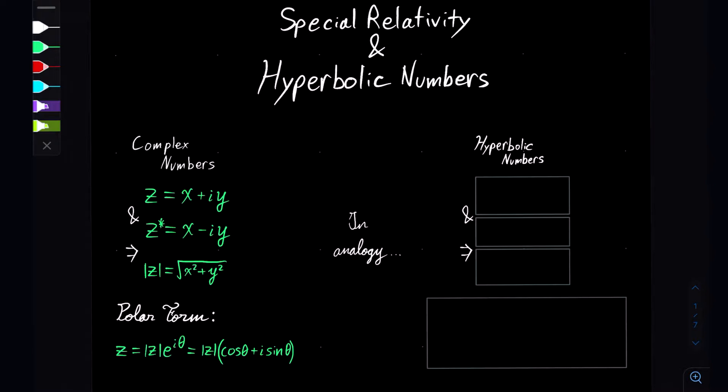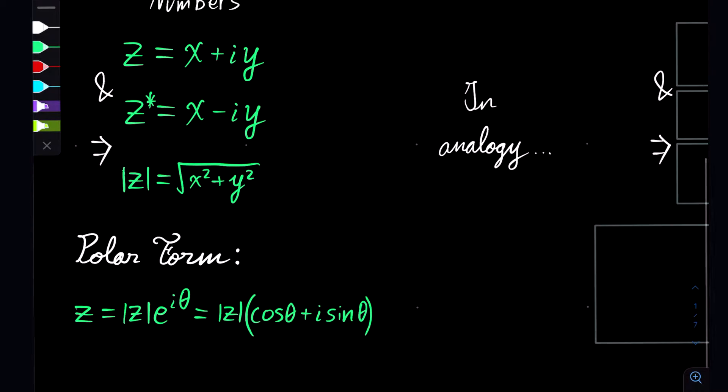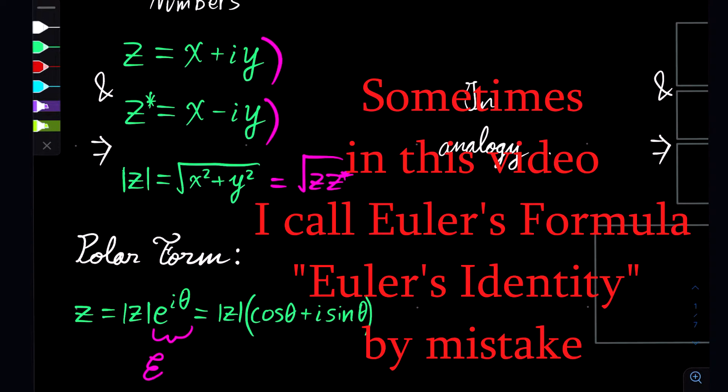First off, everyone is used to the idea of complex numbers, at least if you're interested in mathematics or physics. The traditional coordinate of a complex number is z = x + iy, and it has its conjugate here. You get the magnitude by square rooting z times its conjugate. You can also represent this in polar form where we have the traditional cosine, sine, and the magnitude of z. You can represent this in very succinct terms using Euler's formula.